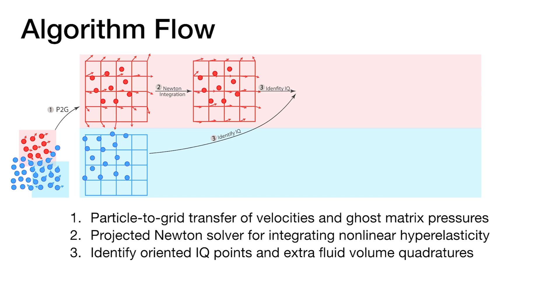Then, interface quadratures and additional fluid volume quadrature points are identified, so that we can construct and solve the coupled pressure-only system and update the velocities using pressure.